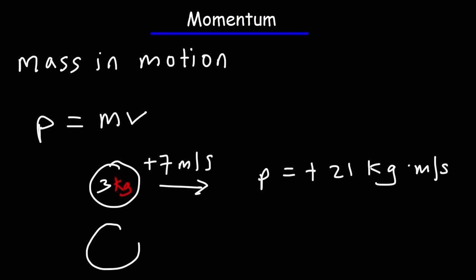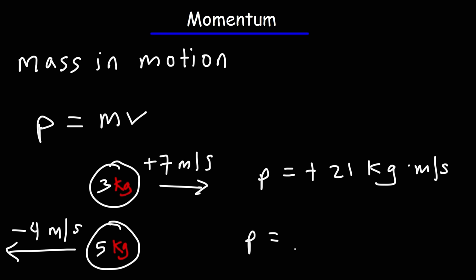Now let's compare that with a five kilogram ball moving west at four meters per second. Its velocity will be negative four. The momentum, which is mass times velocity, is going to be five times negative four — so it's going to be negative 20 kilograms times meters per second. As you can see, momentum is a vector just as velocity is a vector. It can be positive if directed in the positive x direction, or negative if going in the negative x direction.